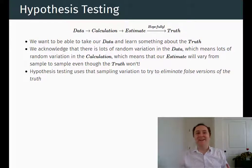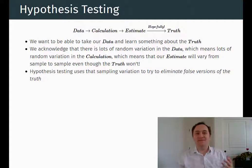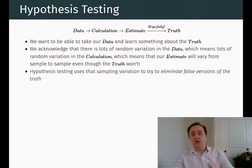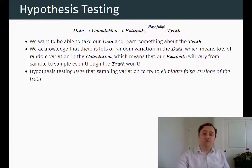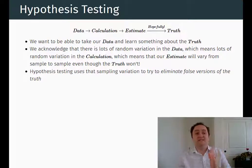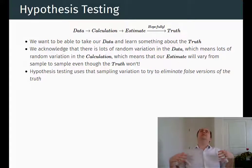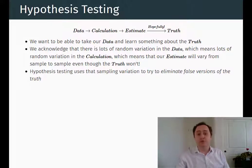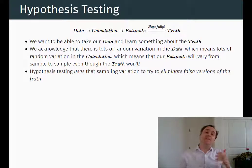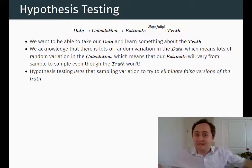Hopefully, if we're doing it right, the estimate that we get will tell us something about the true model. And if we assume that there's no endogeneity problems, then on average we might well get the true beta one that we're looking for. But we would still have sampling variation. So what can we do to reasonably and honestly represent the fact that we don't know exactly what the truth is — that we have some uncertainty based on the fact that we only have one sample of data?